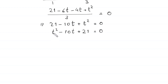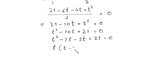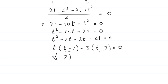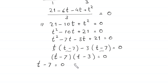We split −10t as −7t − 3t: t² − 7t − 3t + 21 = 0. Factoring: t(t−7) − 3(t−7) = 0, giving (t−7)(t−3) = 0. So either t − 7 = 0, giving t = 7, or t − 3 = 0, giving t = 3.